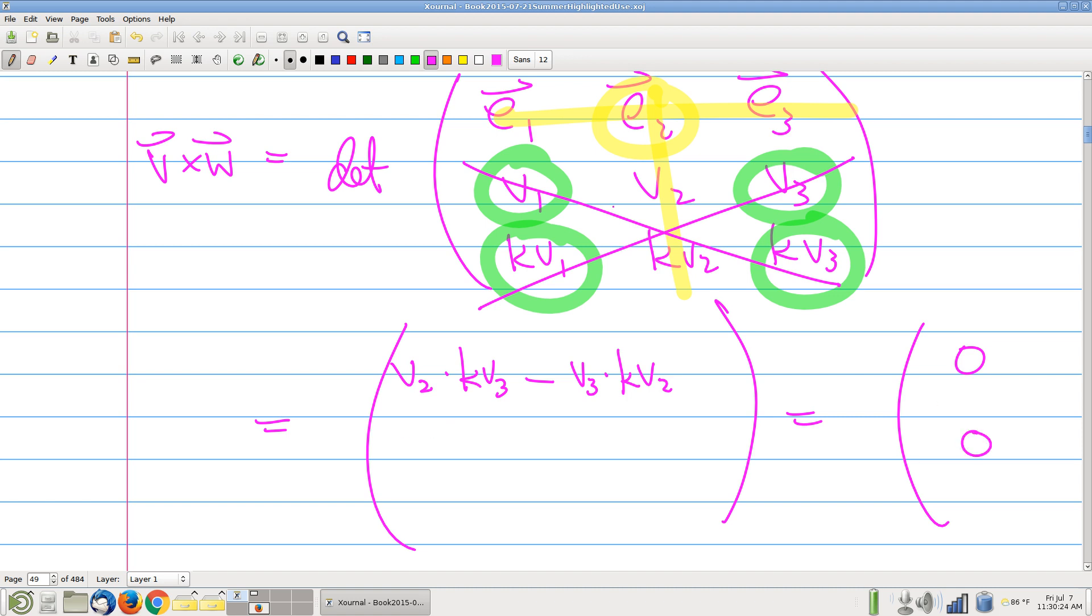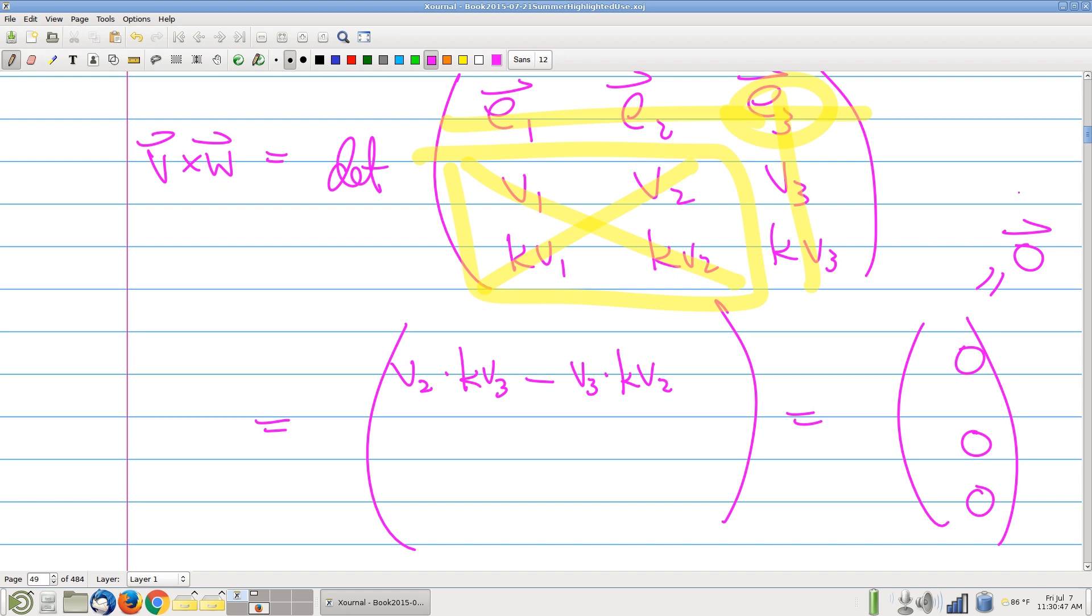And then the third one, same story. For the sake of completeness, let me go ahead - so these are the numbers: V1 times KV2 minus V2 times KV1, and again, that is 0. So I get that the cross product is the 0 vector.